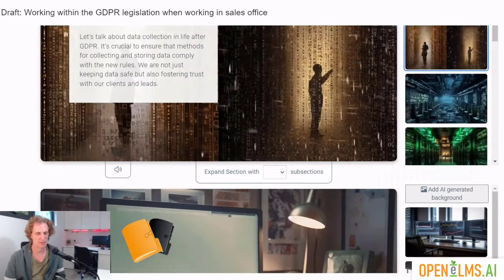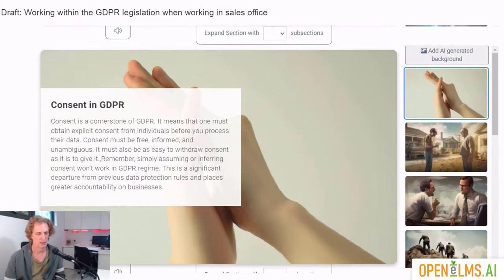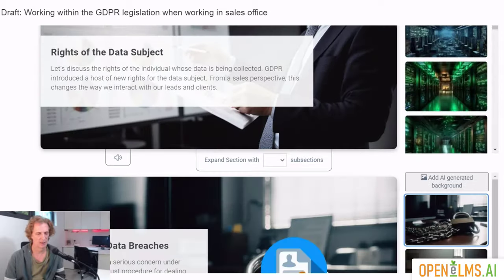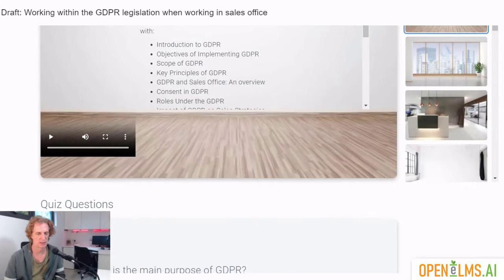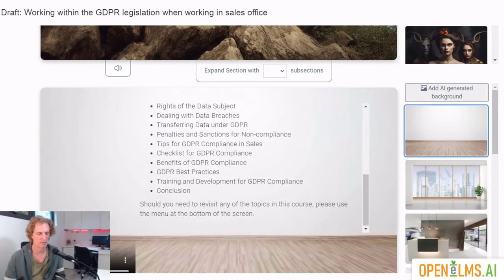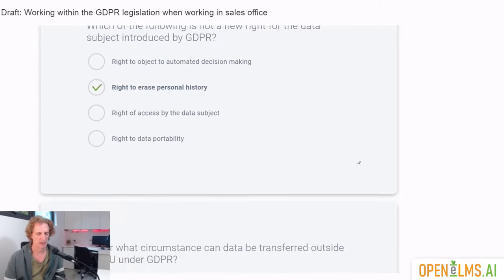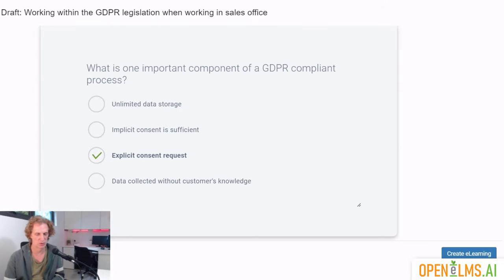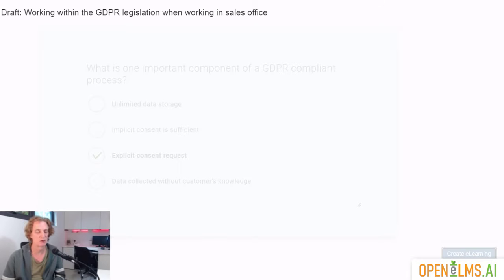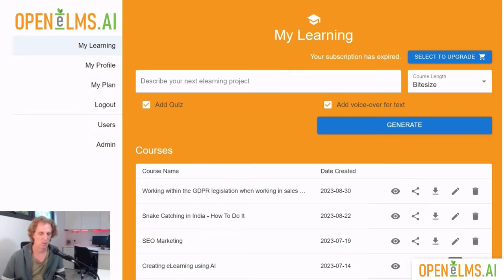If we just scroll back up again we'll see the image that we've created — I think that's consent in GDPR. Writes of the data subject, et cetera. Scrolling to the bottom, you can see it's quite an in-depth course. We have a summary with a video presenter that would come on and give us some information, and we have some quiz questions. With these courses, the longer the course, the more questions there are. Now we press create eLearning and that's going to create the course for us.